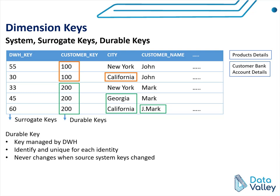To summarize, a durable key is a key managed by the data warehouse. It is unique for each entity — which could be a customer, a product, or a service detail — and it never changes when source system keys change. It is totally independent of source system keys. So we can identify durable keys as a unique and fixed key for each entity.